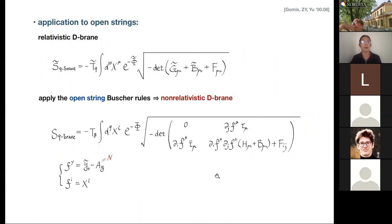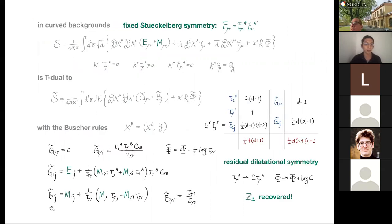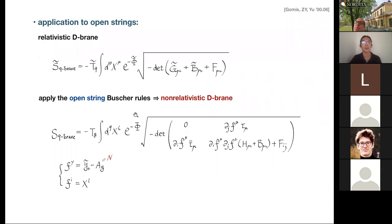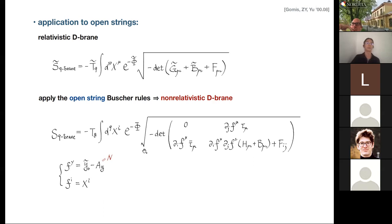We've discussed the Buscher rules for closed string theory. You can also apply them to the open string sector by introducing the gauge field component separately, effectively treating it as part of the B-field but only taking values on the D-brane. Applying similar Buscher rules for open string theory: starting with the relativistic D-brane action and applying this set of rules, we get the Galilean DBI action — which also includes non-commutative open string theory in principle.